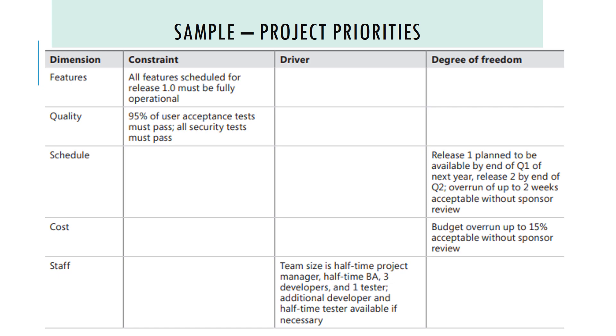This is a sample of project priorities. We can see 5 dimensions: features, quality, schedule, and cost.